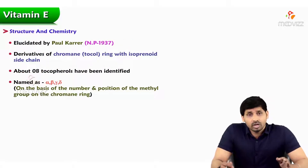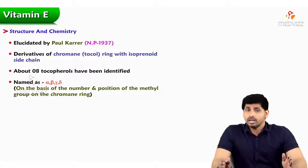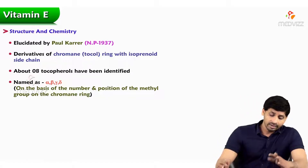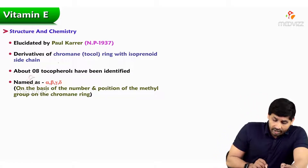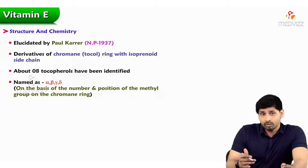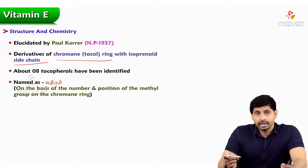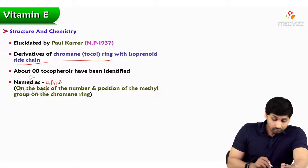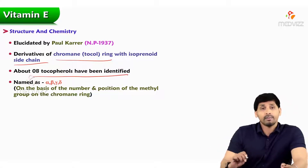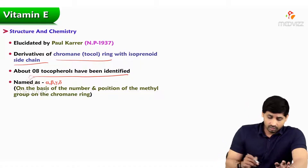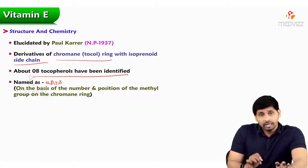Coming to the structure and chemistry of Vitamin E: the first scientist to explain the structure was Paul Karrer, who won the Nobel Prize in 1937. The structure is mainly composed of a chromanol ring and an isoprenoid side chain. About eight tocopherols have been identified.